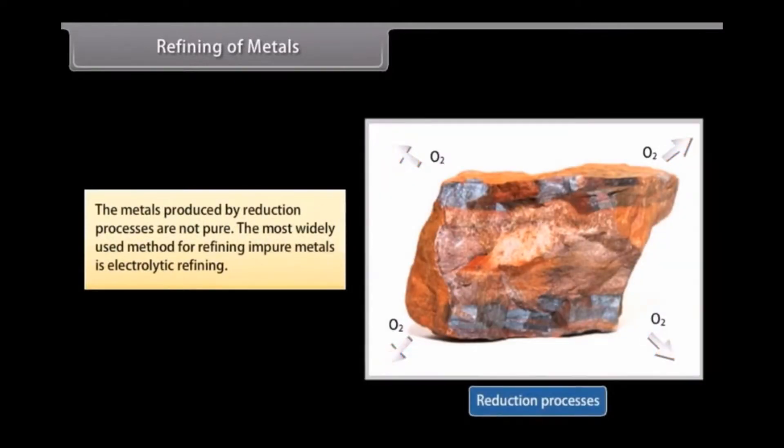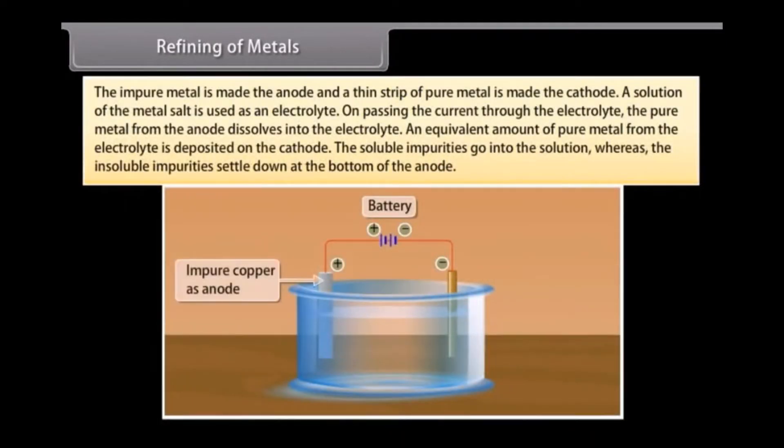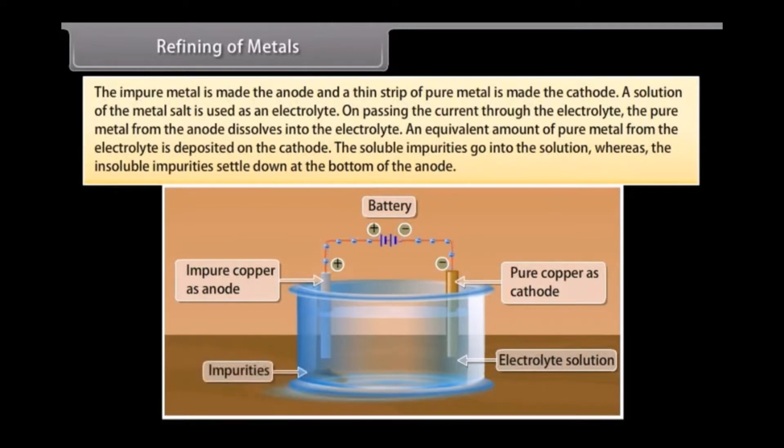Refining of Metals: The metals produced by reduction processes are not pure. They still contain impurities which must be removed to obtain pure metals. The most widely used method for refining impure metals is electrolytic refining. Many metals are refined electrolytically. The impure metal is made the anode and a thin strip of pure metal is made of cathode. A solution of the metal salt is used as an electrolyte. On passing the current through the electrolyte, the pure metal from the anode dissolves into the electrolyte. An equivalent amount of pure metal from the electrolyte is deposited on the cathode. The soluble impurities go into the solution whereas the insoluble impurities settle down at the bottom of the anode. These are known as anode mud.